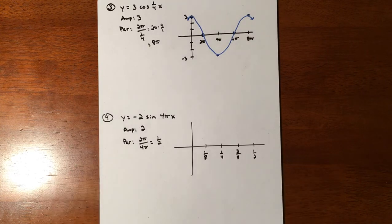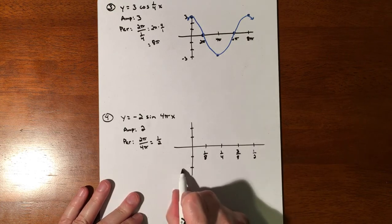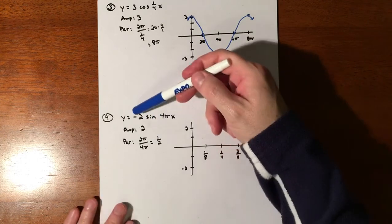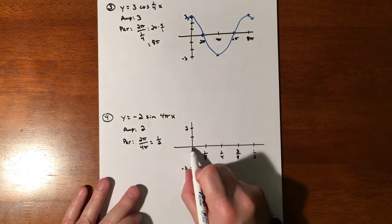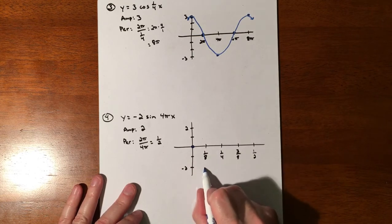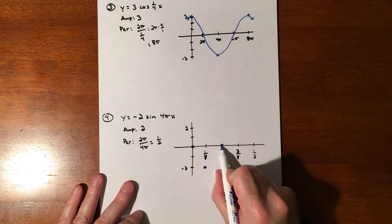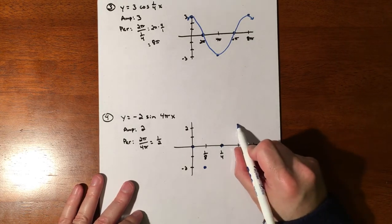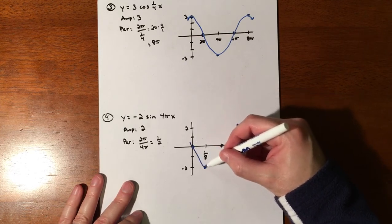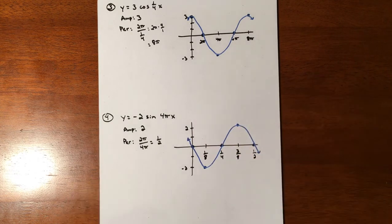And then we are going up and down 2 because of our amplitude. So our graph fluctuates from a negative 2 to a positive 2, and it is going to be vertically reflected. So the sine starts on the line, should have went up, but it got vertically reflected, so it's going to go down. So negative, back to the middle, high point, low point.